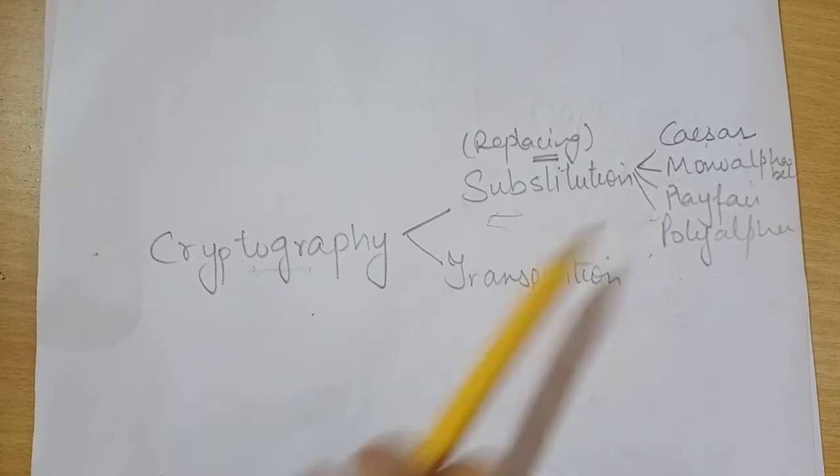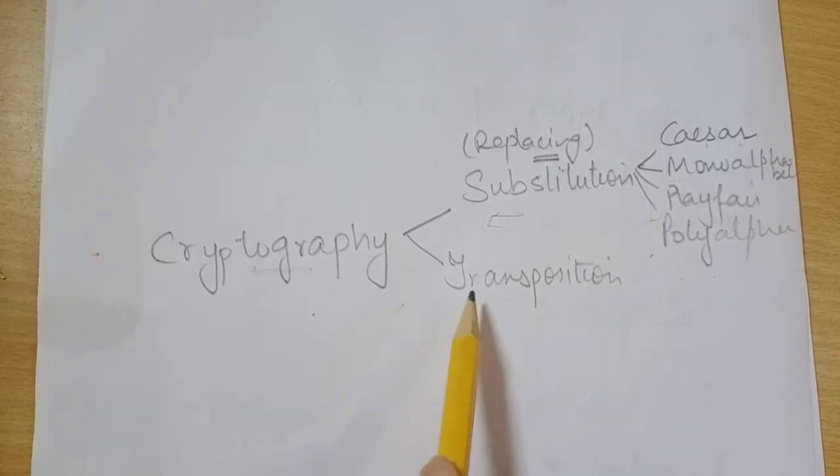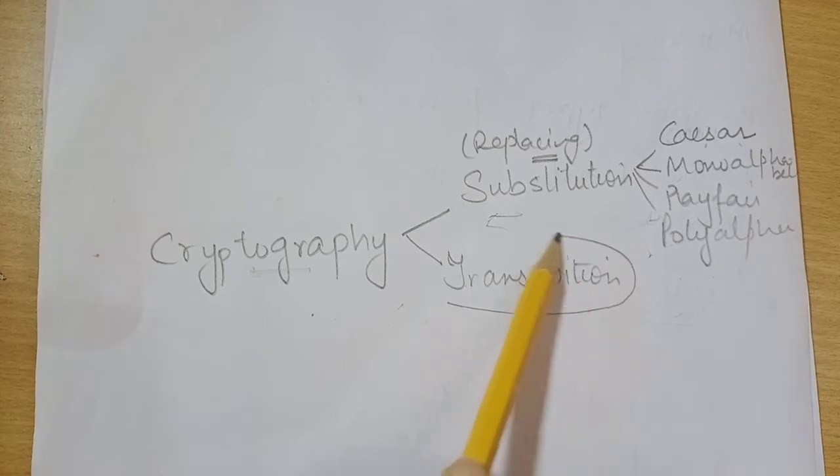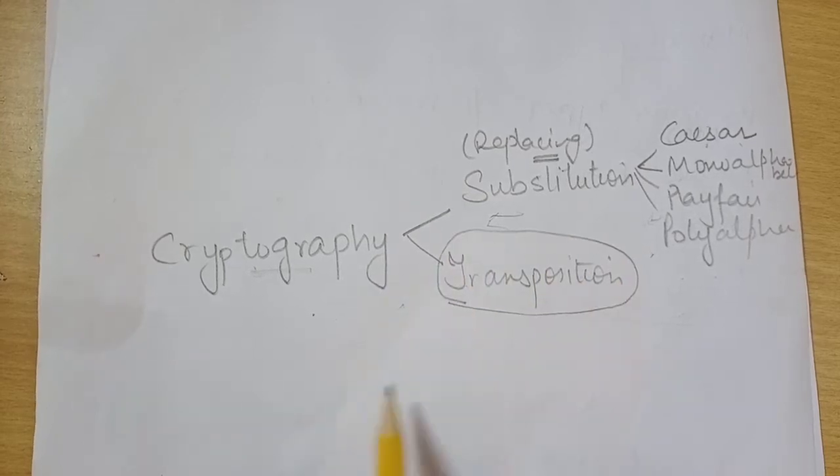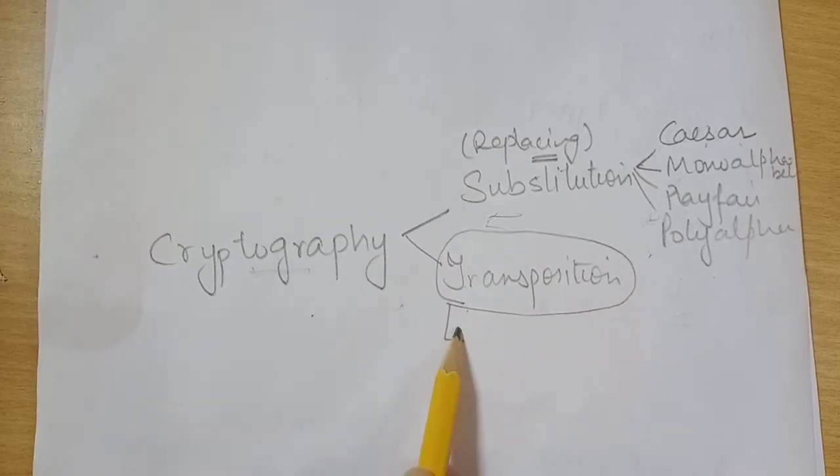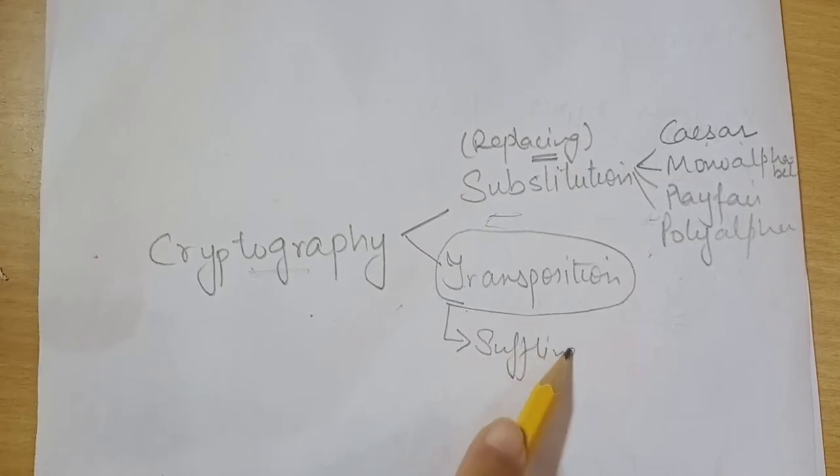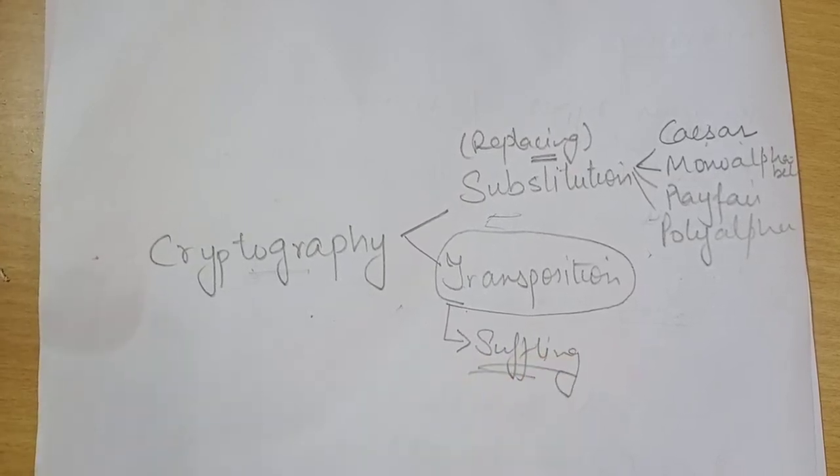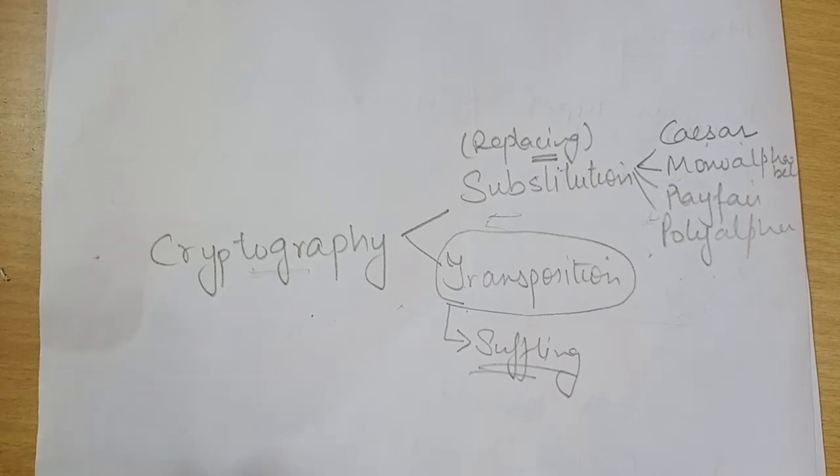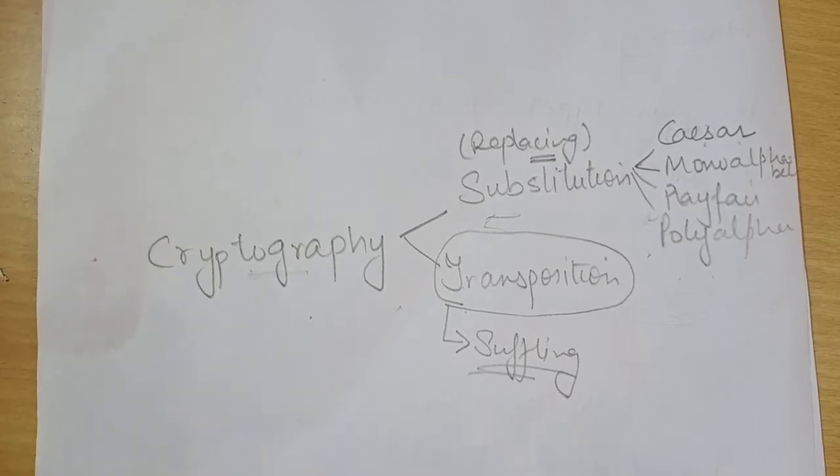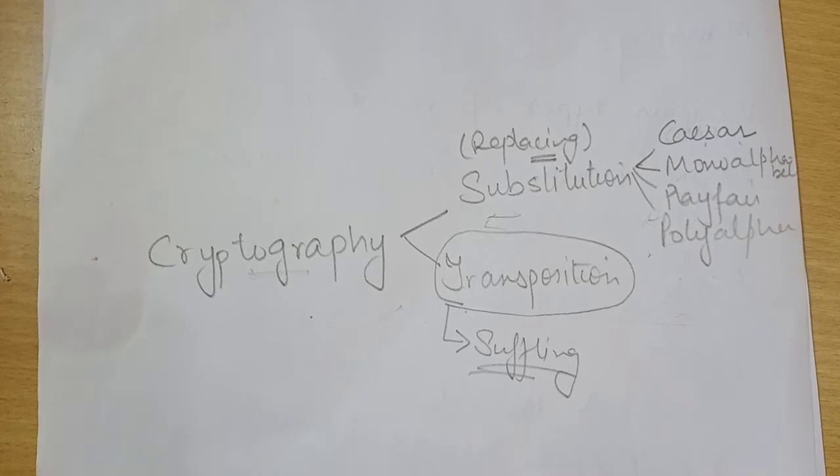Now in this case, in today's video I'll discuss the second approach for cryptography that is called transposition. Transposition means shuffling, shuffling the characters not replacing the characters.